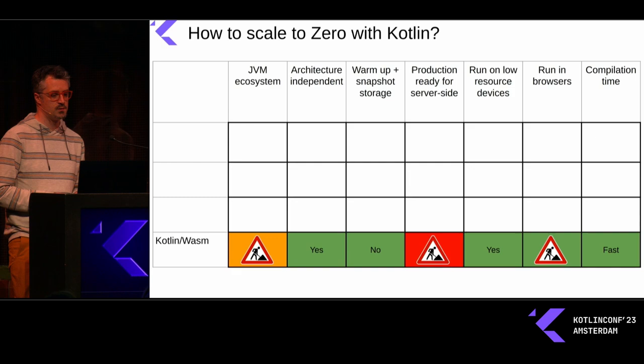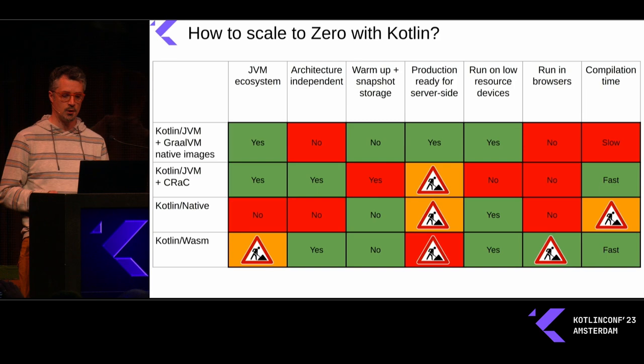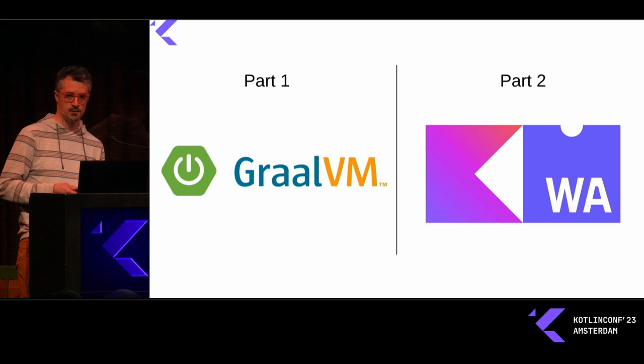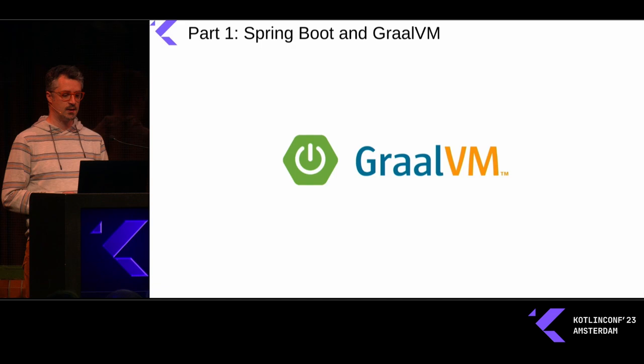Here is the full comparison table for the various options. Today we are going to compare the first line — Spring Boot with GraalVM — and the last one — Kotlin Wasm — and focus on these two options. For the first part we'll explore how to develop a Kotlin application with Spring Boot and GraalVM, a production-ready option you can use today. For part two we'll explore the super experimental Kotlin Wasm option.